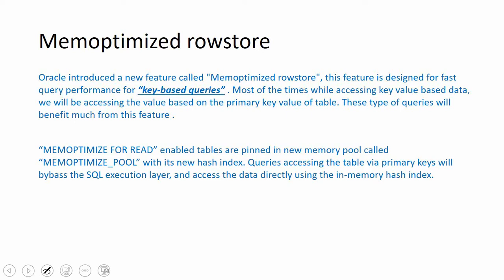To enable this feature, we need to create the table with an additional clause called mem-optimized for read. Whatever tables are created with this particular clause will be cached in this pool. Oracle introduced a new pool called memoptimized_pool, which will be available in the SGA and stores information whenever we access the table using the key value only.